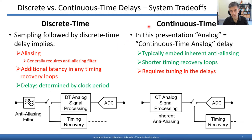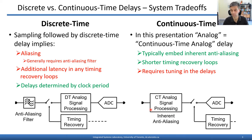Continuous-time delays, on the other hand, typically embed inherent anti-aliasing within them, so you get a two-for-one for free. Moreover, since continuous-time delays are placed prior to any sampling, they shorten the latency associated with any timing recovery loops. However, implementing tunable continuous-time delays can be more difficult, especially if we want to tune them over a very wide range of delay times.